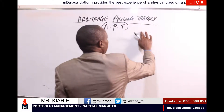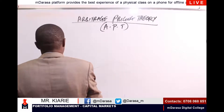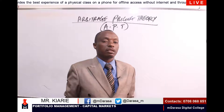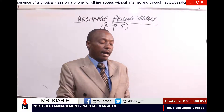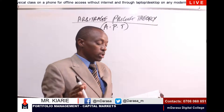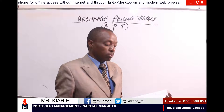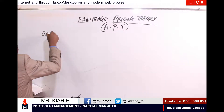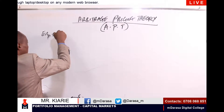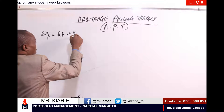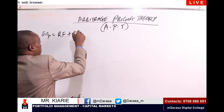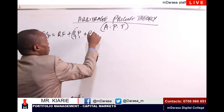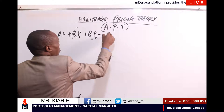We are going to apply Arbitrage Pricing Theory to determine the expected return. As we said earlier, APT is a multi-factor model, and therefore in this case the expected return will depend on all those factors listed: GNP, inflation, interest rates, share market index, and industrial production. Using APT, the expected return of the portfolio is given by the risk-free rate plus beta of the first factor multiplied by the premium of the first factor, all the way to beta N multiplied by premium N.